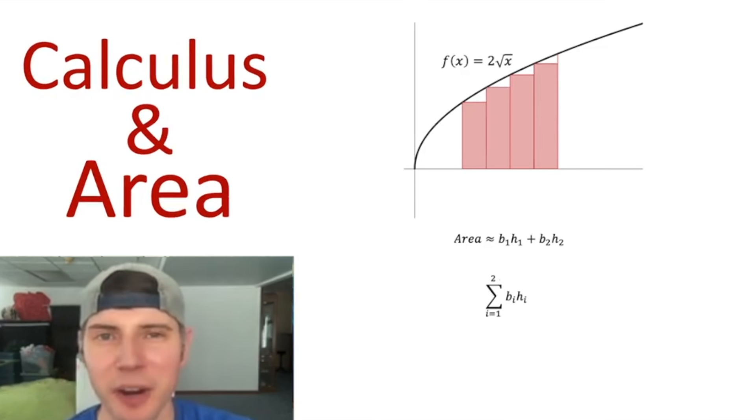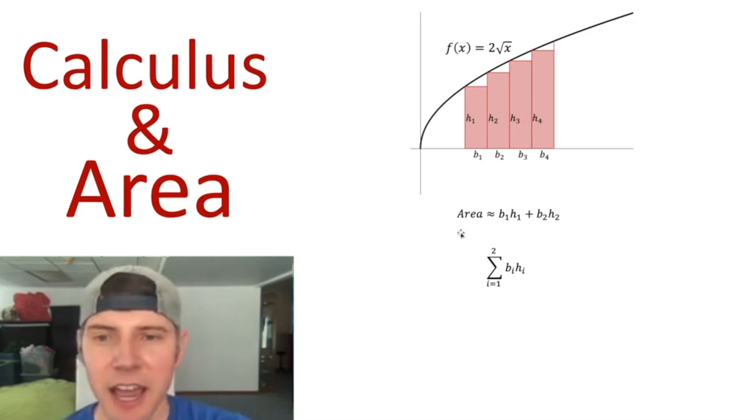Next, let's do four rectangles. Here are all the bases, and here are all the heights. To add all these up, it will just have four of them, or we can change sigma notation and make this a four.